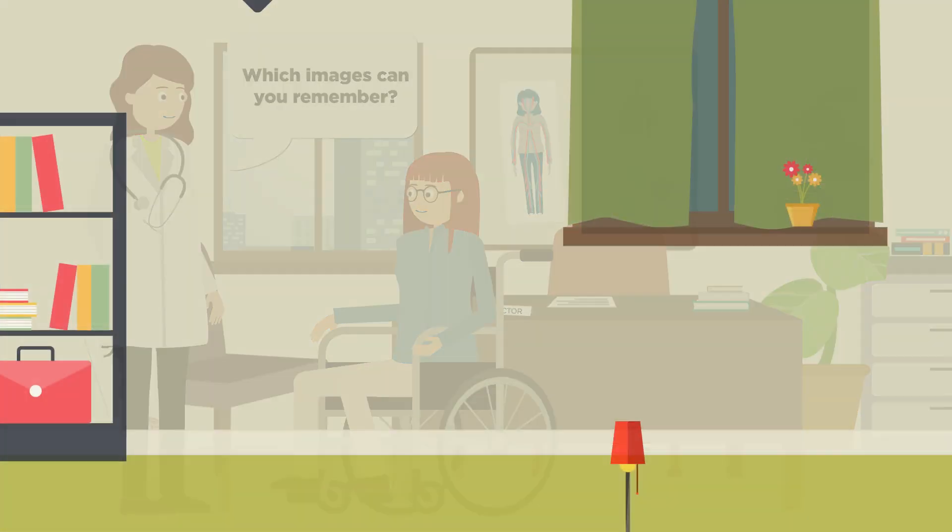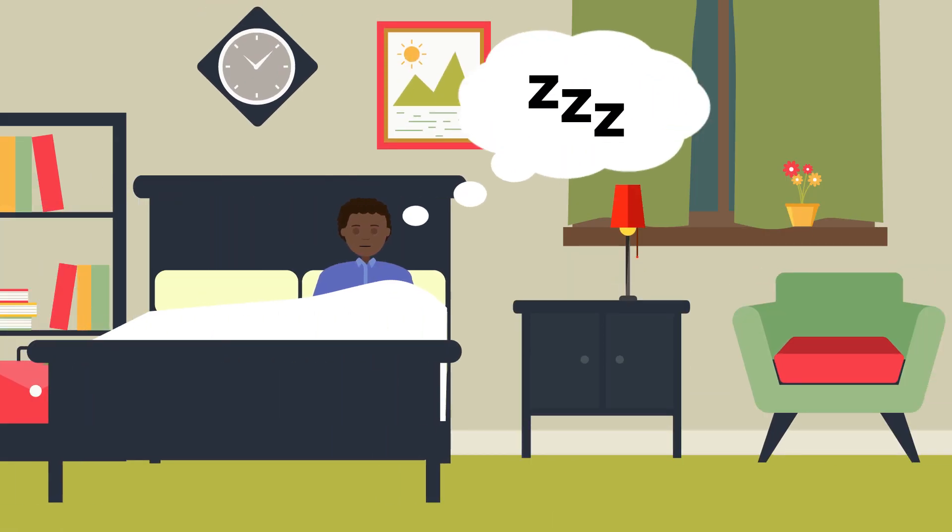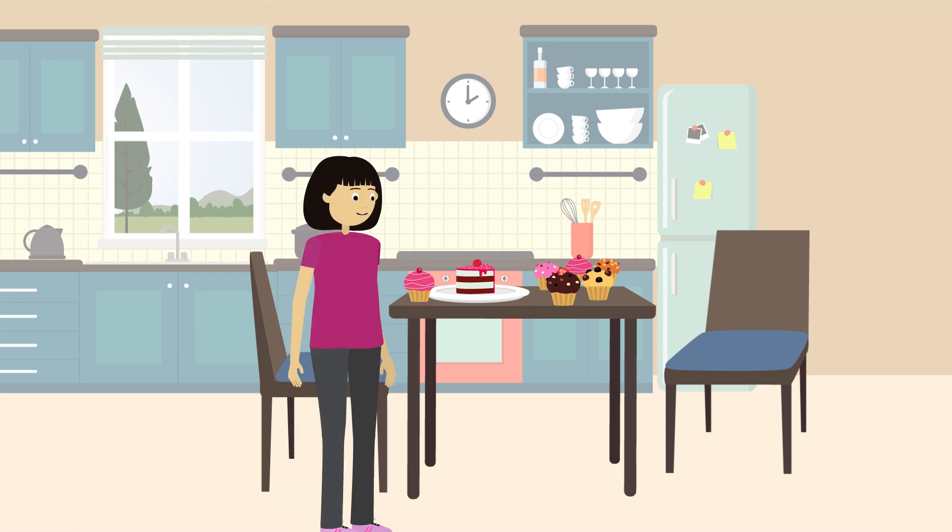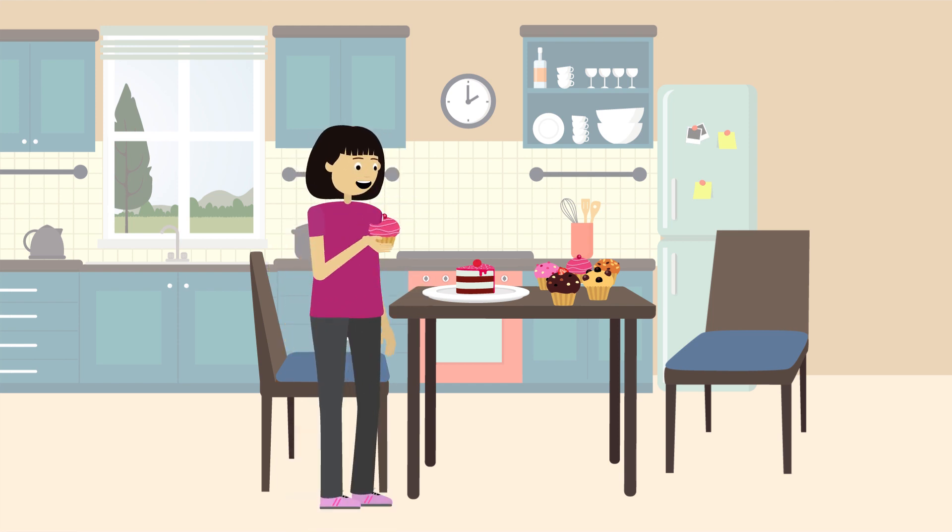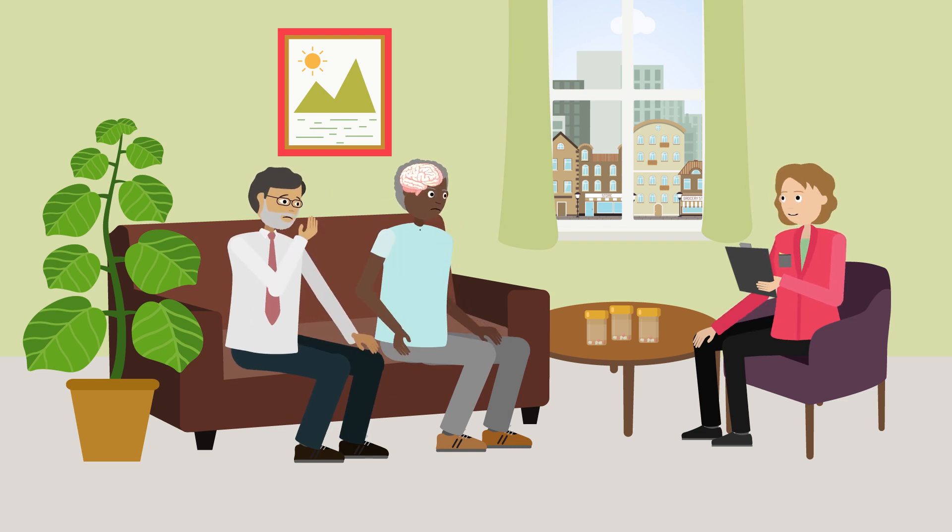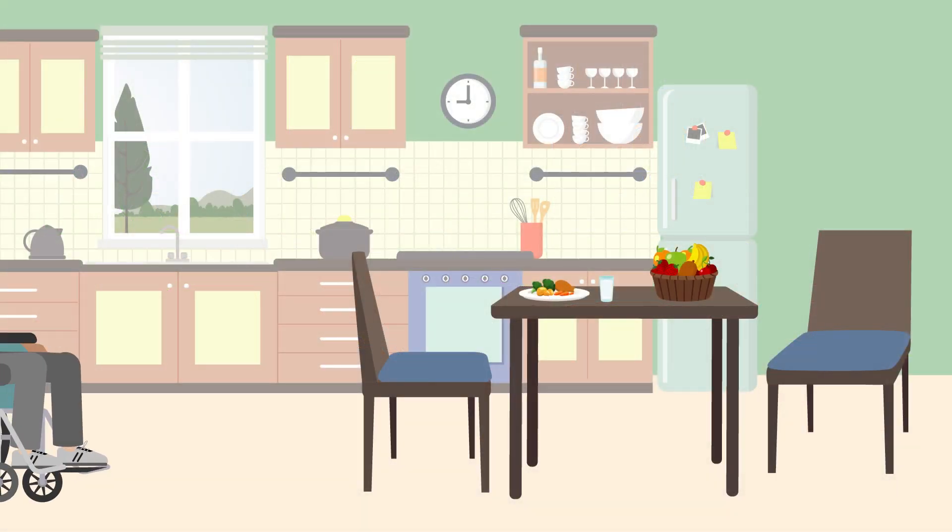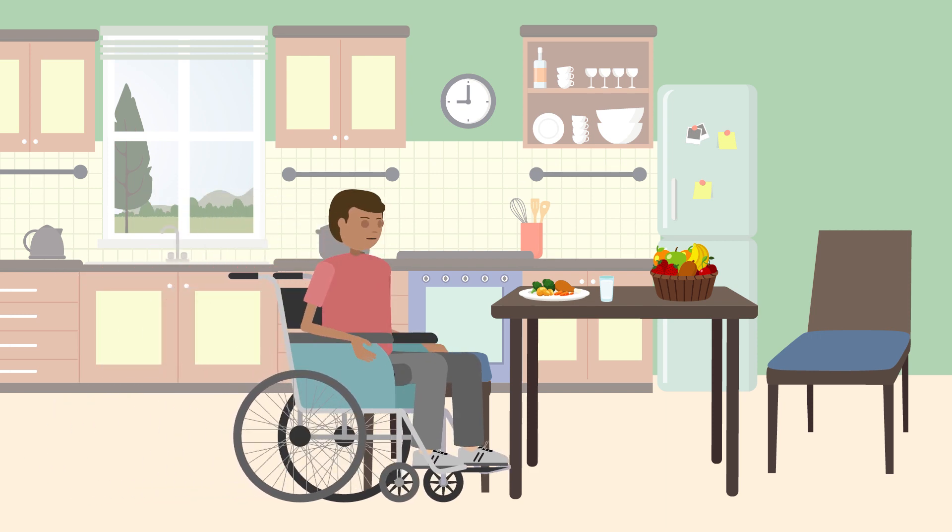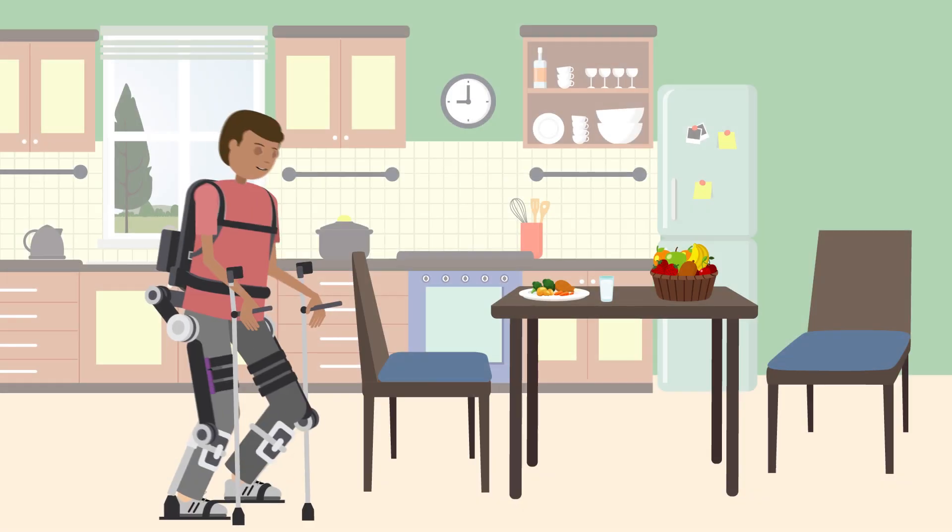For example, why we dream and how sleep aids memory, how the brain controls how hungry you get and what you eat, why you get depressed and how drugs affect brain chemistry and cause addiction. Understanding the brain can even help paralyzed patients walk or talk again.